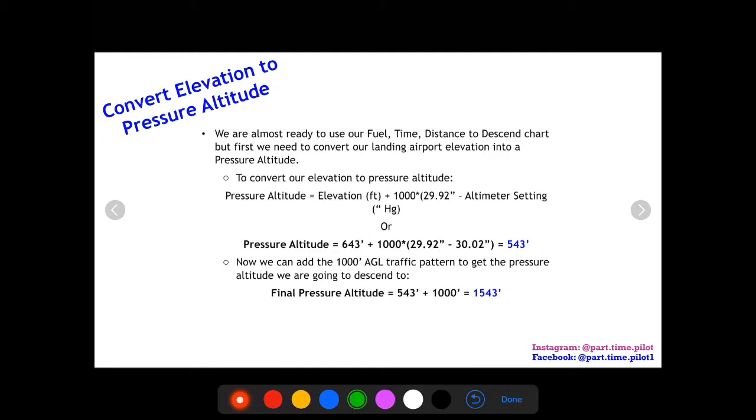The equation here is elevation plus a thousand times the quantity of 29.92 minus our altimeter setting. So 29.92 is the standard atmosphere altimeter setting, and then we subtract our own altimeter setting. So this can be a negative value. And then we multiply that by a thousand, and then we add that to the elevation.